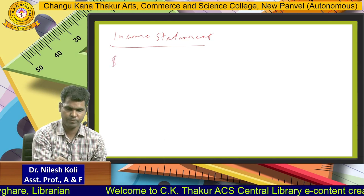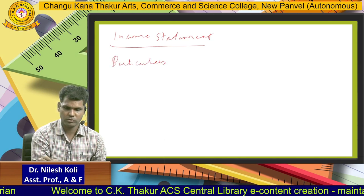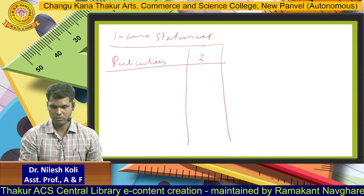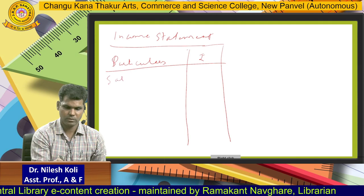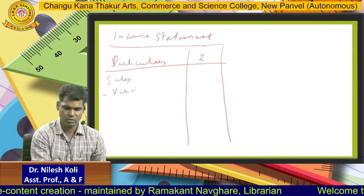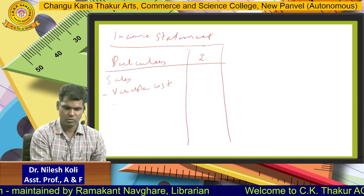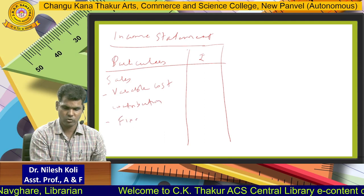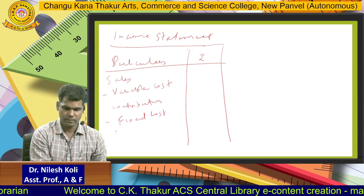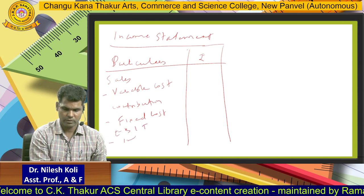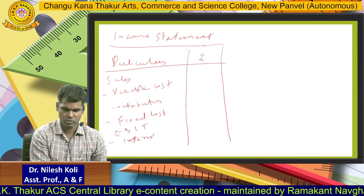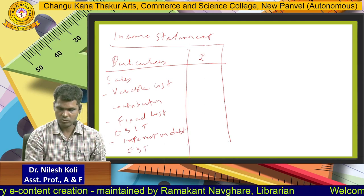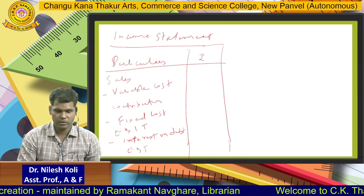The columns will be Particulars and Rupees — these two columns are there. First: Sales, less Variable Cost, Contribution, less Fixed Cost, EBIT, less Interest on Debt, EBT. This is the format of the income statement.